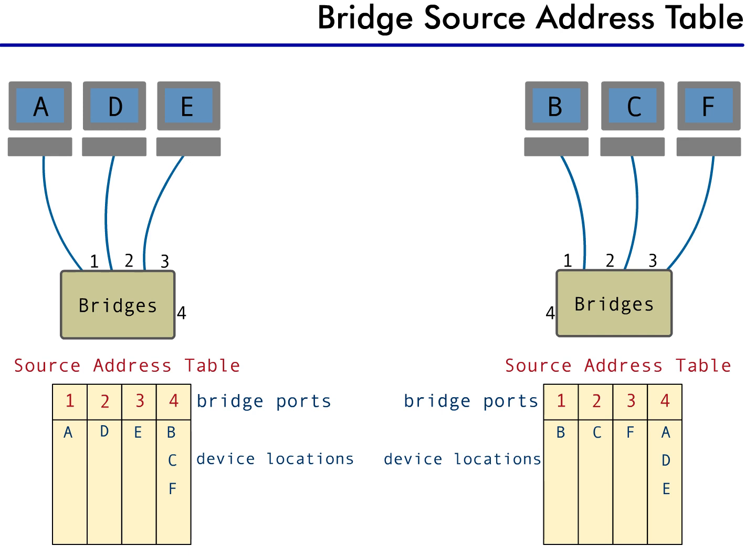And remember, in this case, the source address is the MAC address. If a bridge sees a packet that originated from device D, and that packet was received on port 2, the bridge records that device D is located on port 2. This information is then added to the bridge's source address table.